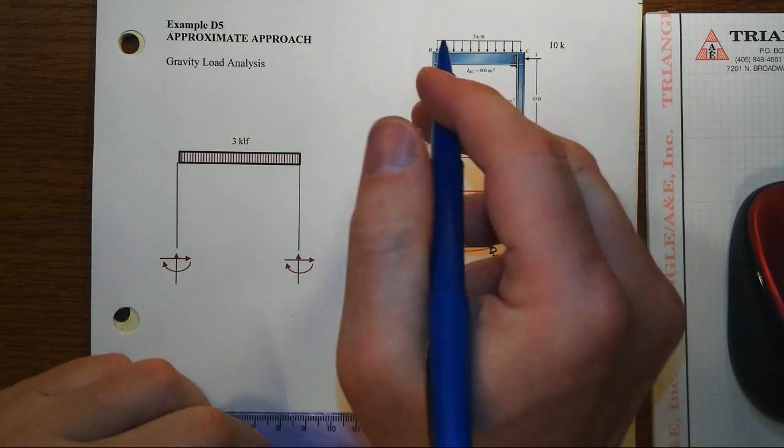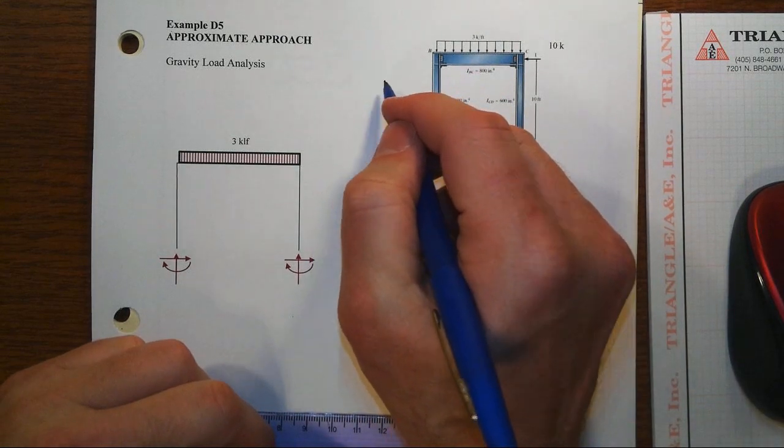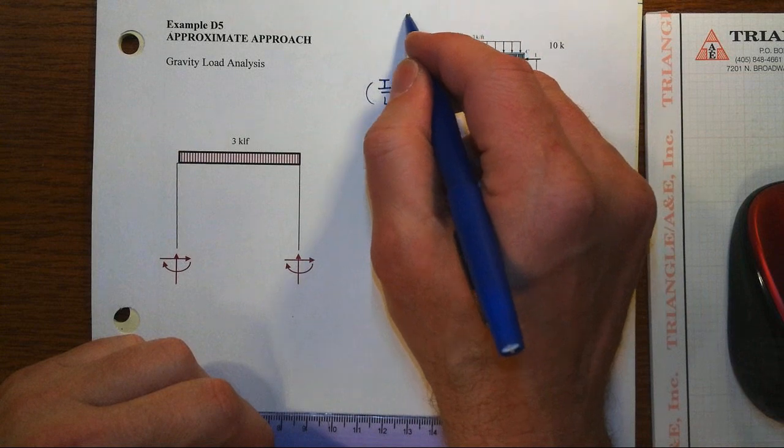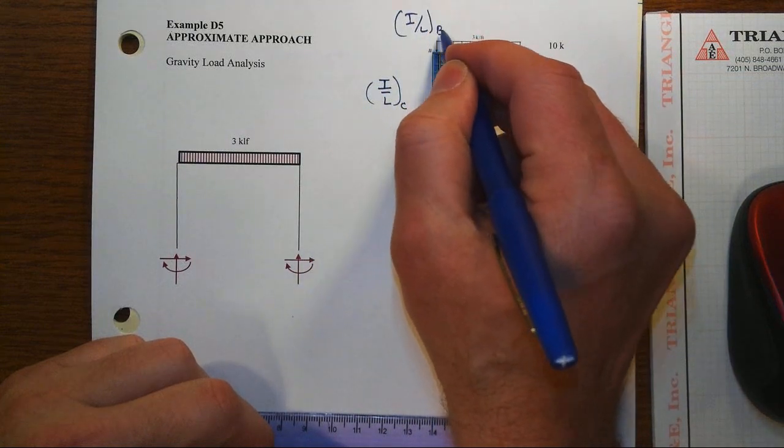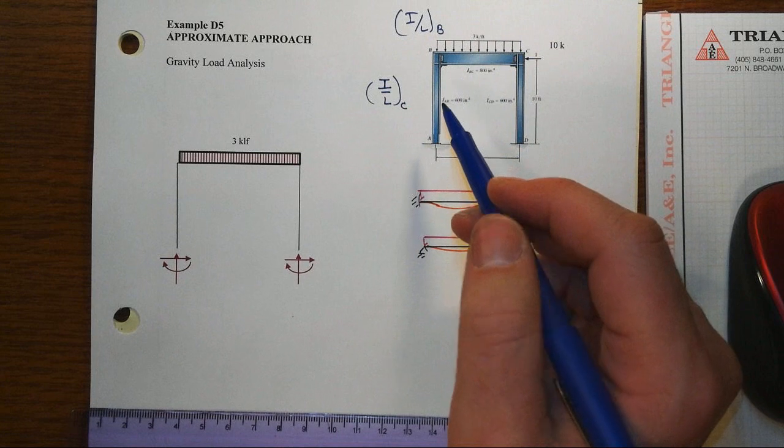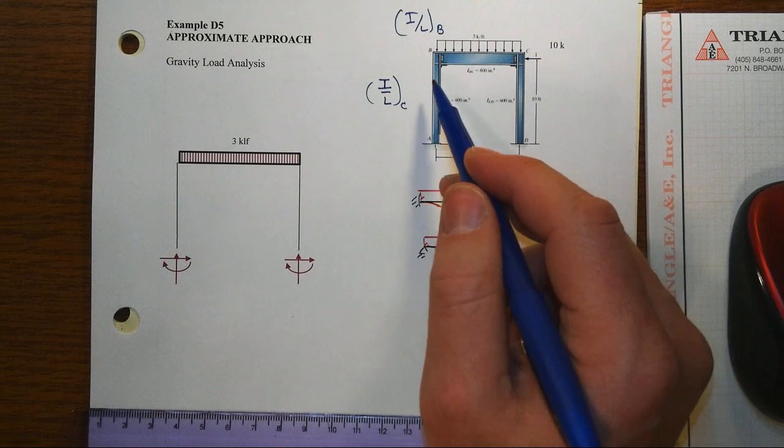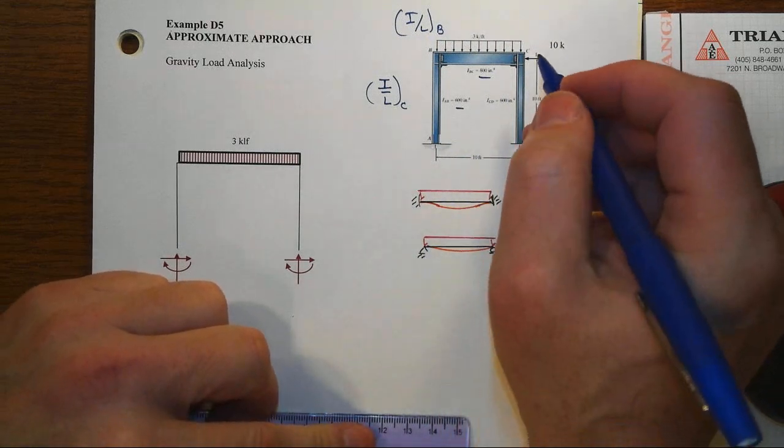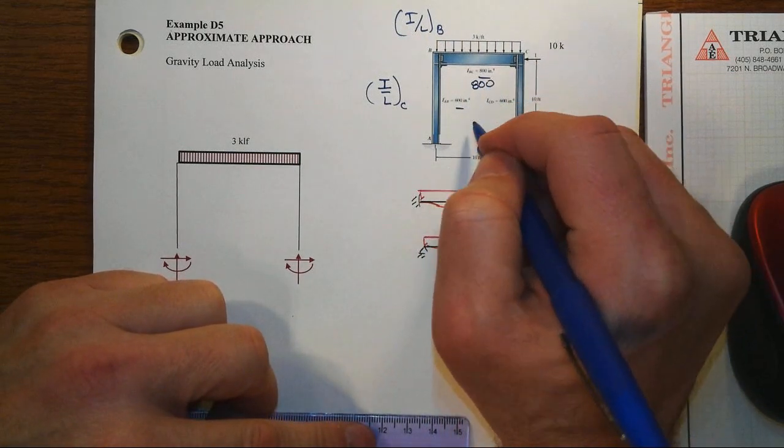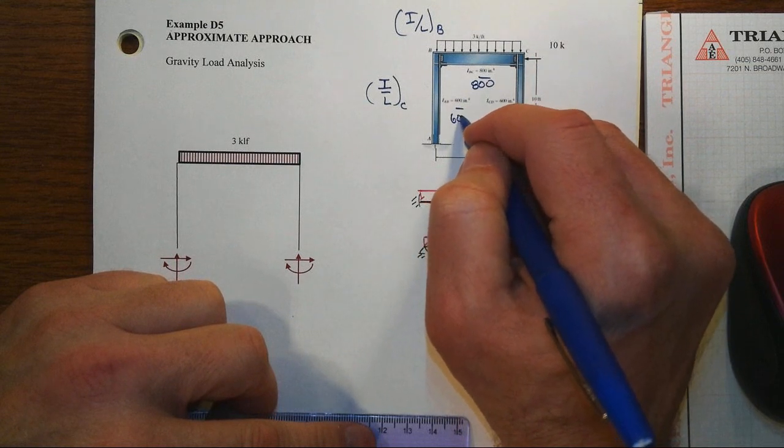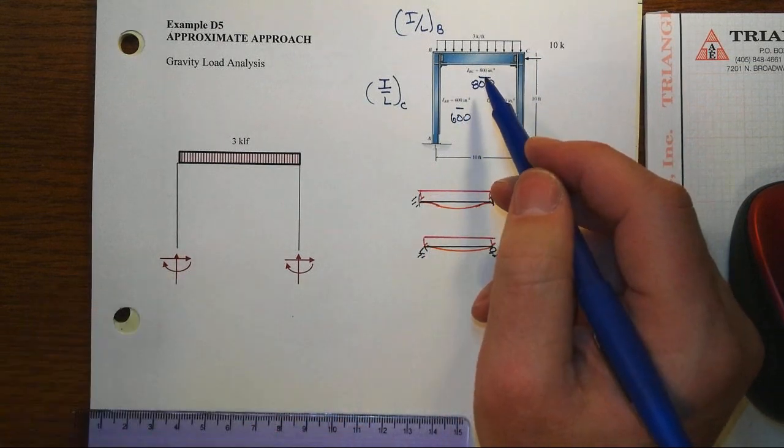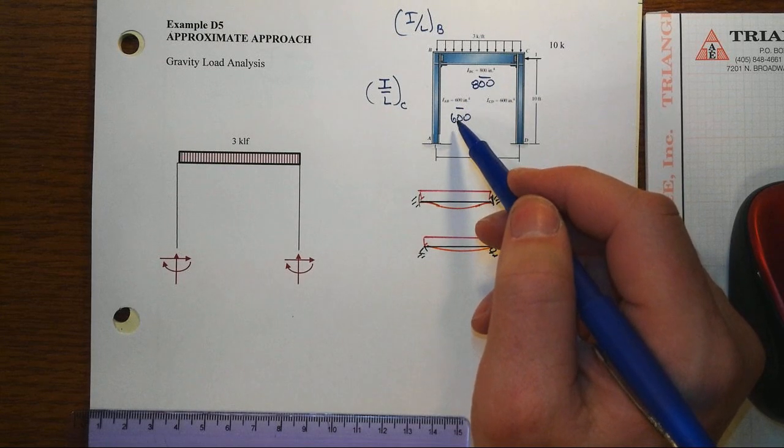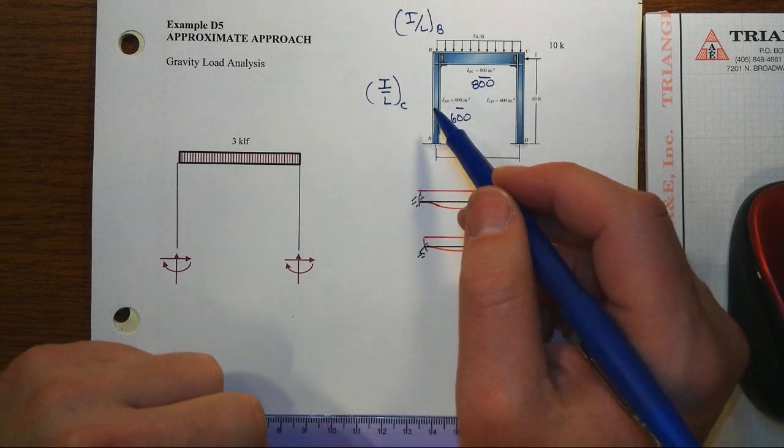From previous work, one way to begin to think about that is just the I over L of each column compared to the I over L of the beam. In this case since the lengths are the same, 10 feet and 10 feet, then it becomes really about the moments of inertia, which would be 800 for the beam and 600 for the column. So I would expect that the beam is a little bit stiffer by about a third compared to that of the columns when you look at the I over L, given that the E's are all the same.